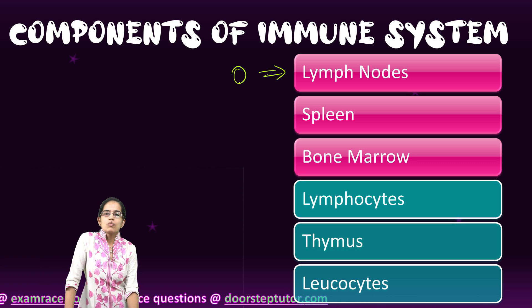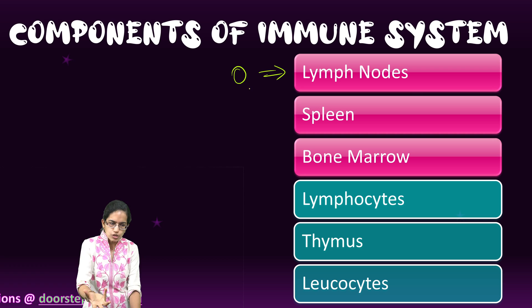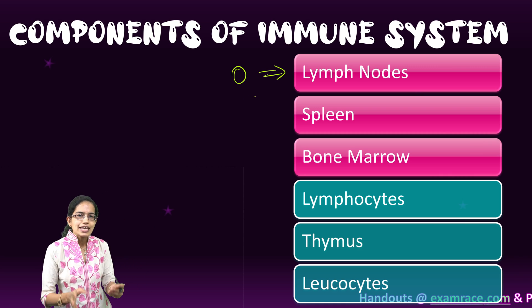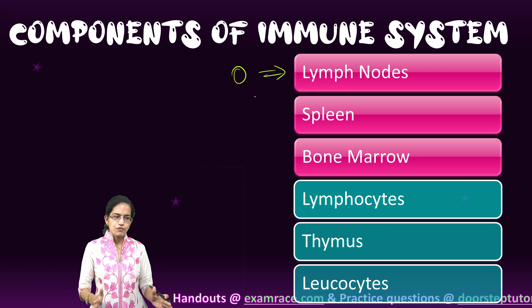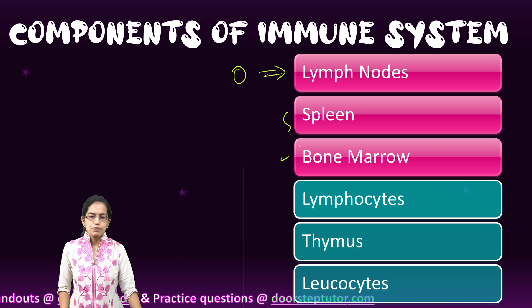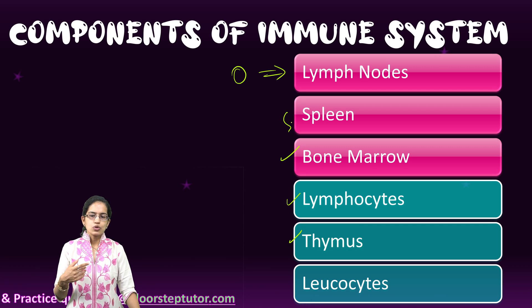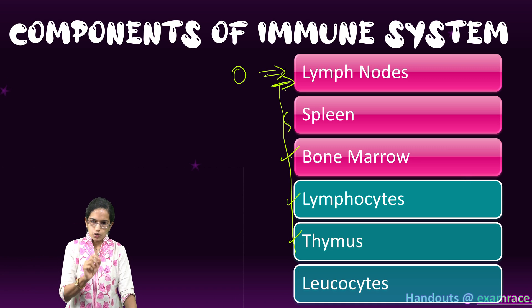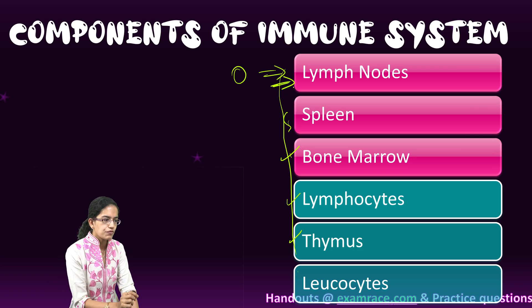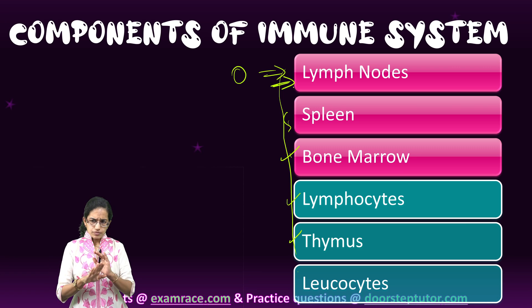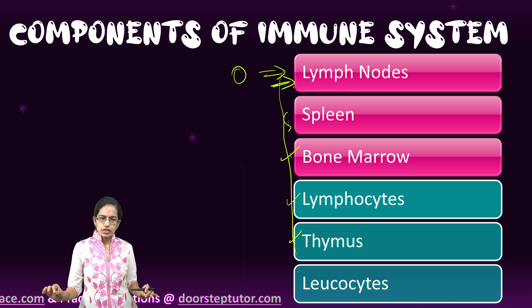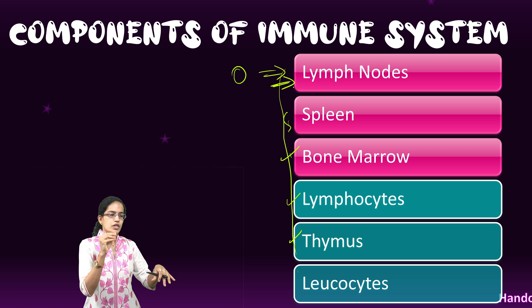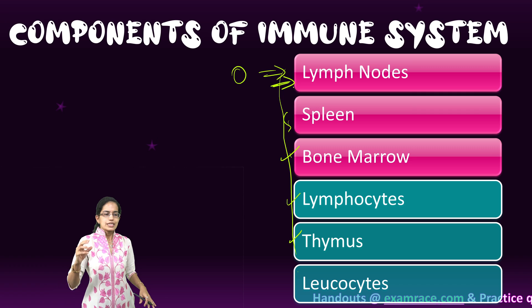Lymph nodes are small bean-shaped structures that produce and store cells which help you fight infection or disease. They are part of the lymphatic system, which consists of bone marrow, spleen, thymus, and lymph nodes. Lymph nodes carry a clear, colorless fluid to different parts and organs of the body, and wherever there is a lymph node, that region can become enlarged or sore.